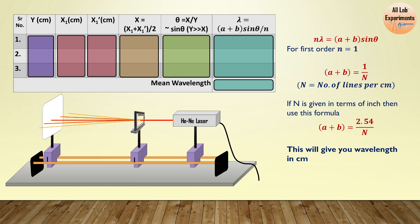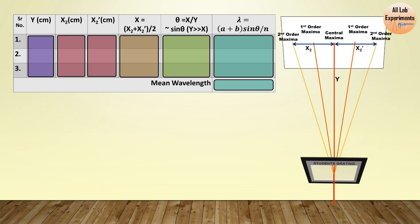Now you can also perform this experiment for second order spectra. So construct the same table for the second order. Instead of observing the distance of first order maxima from the center, now we will observe the distance of second order maxima from the center. So we will observe X₂ and X₂'.